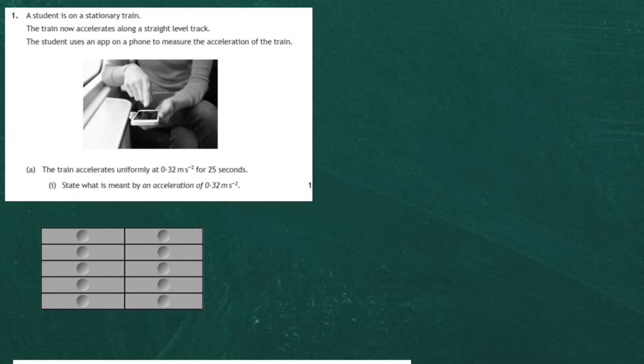Section 2, Question 1 of the 2017 Higher Physics examination from the SQA. A student is on a stationary train that accelerates along a straight level track, using an app on a phone to measure the acceleration. Part A says the train accelerates uniformly at 0.32 meters per second every second for 25 seconds. For one mark, we have to state what is meant by an acceleration of 0.32 meters per second every second.